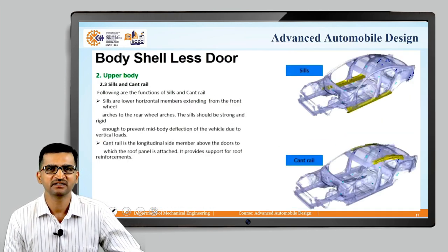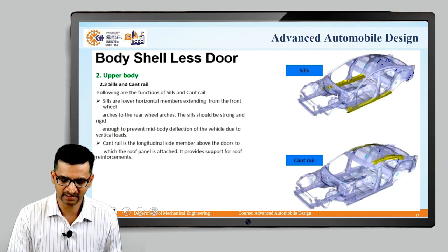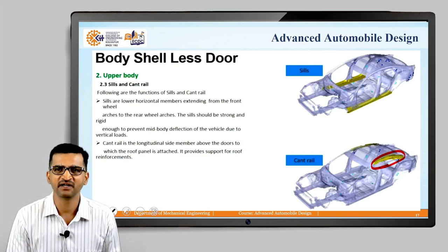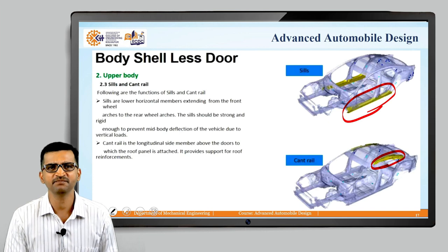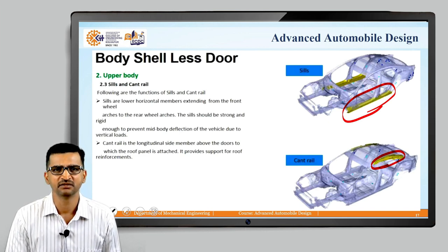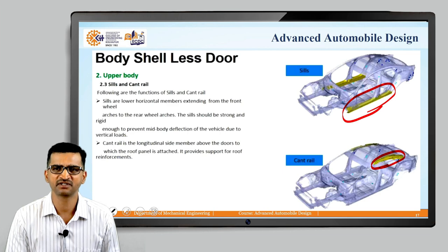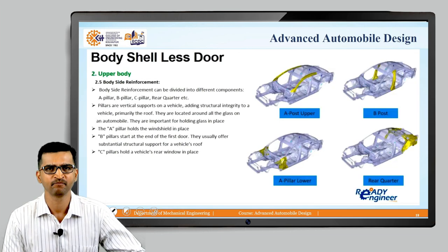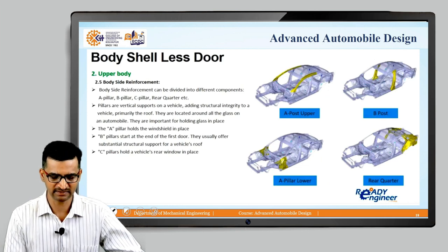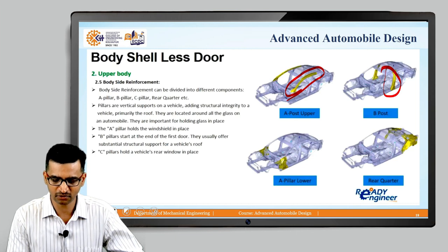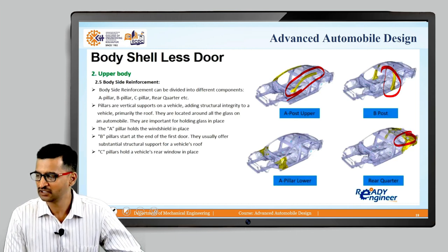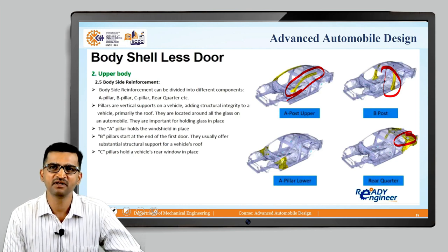This is the sill and cant rail. The cant rail is the structure to which the roof is connected, and the sill provides stiffness and plays an active role in load transmission. Next is the side reinforcement. You can see the A pillar and the B pillar — and obviously there is a C pillar not shown here, and a D pillar if the car is an SUV. The function of the A, B, and C pillars is to protect the passengers in case of rollover and side impact.